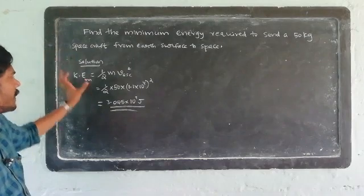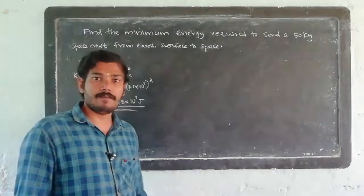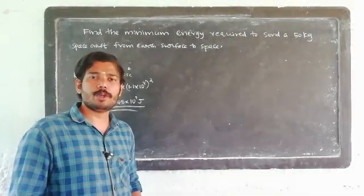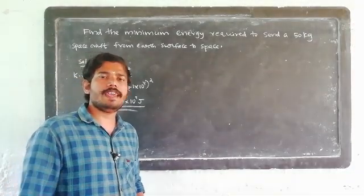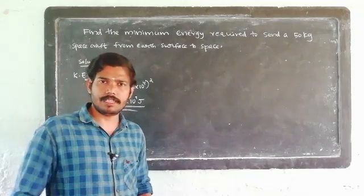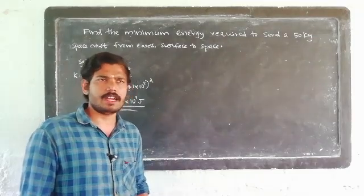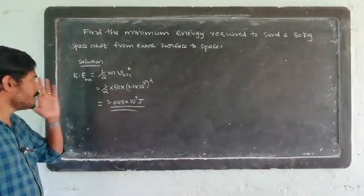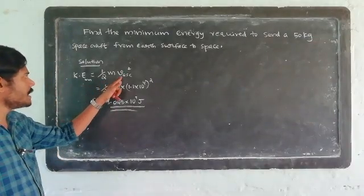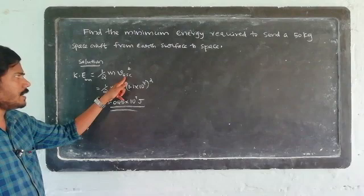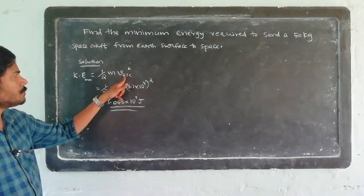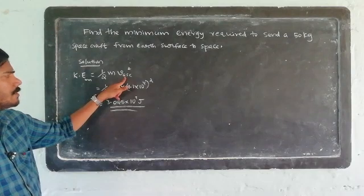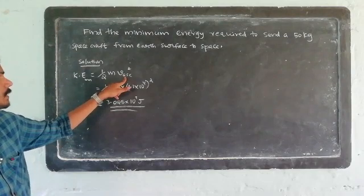The kinetic energy expression is ½mv². The minimum velocity required to cross over Earth's gravitational field and reach space is the escape velocity. So the minimum kinetic energy is ½mv², where v is the minimum velocity required to send the spacecraft from Earth's surface to space — that is the escape velocity.